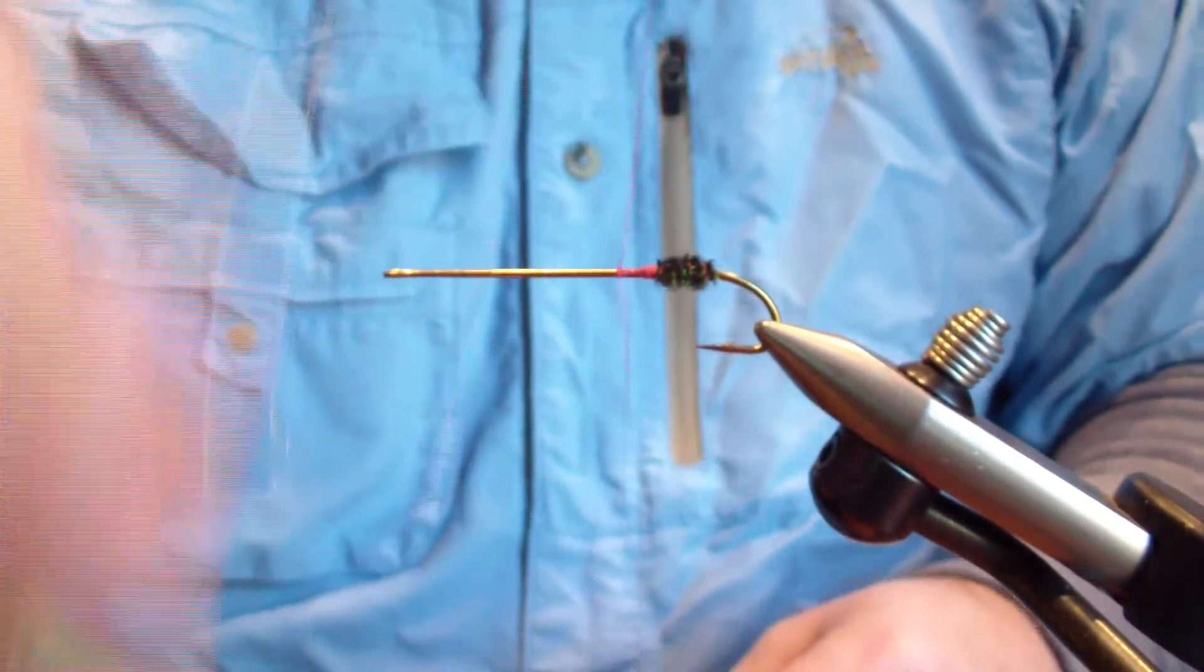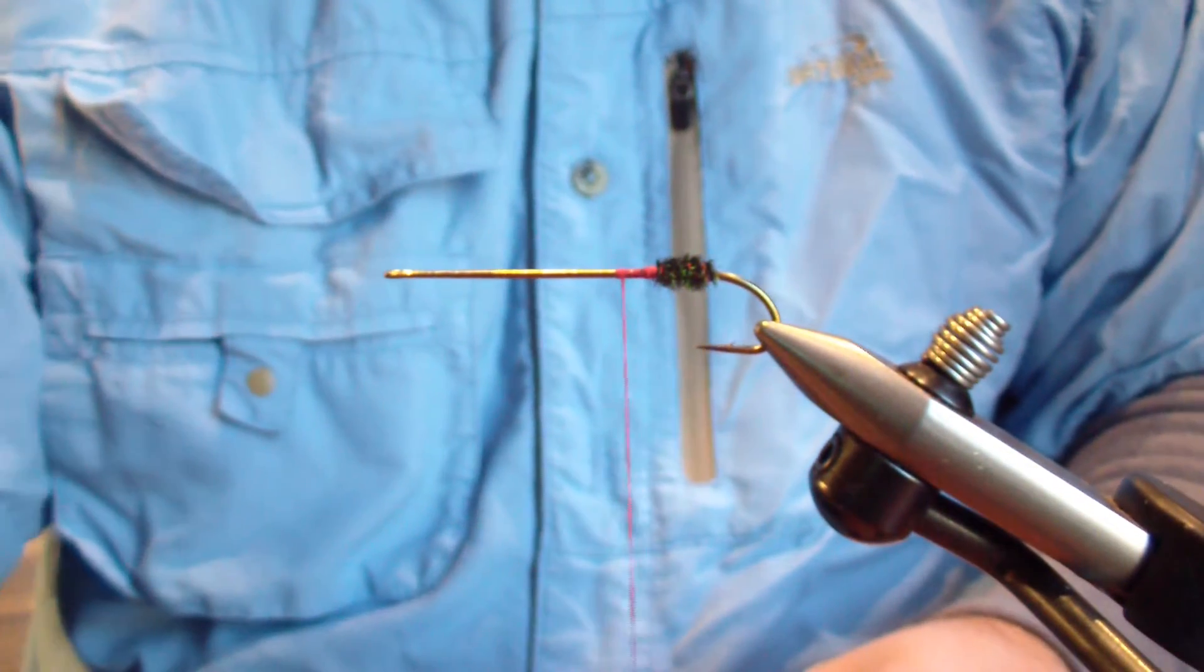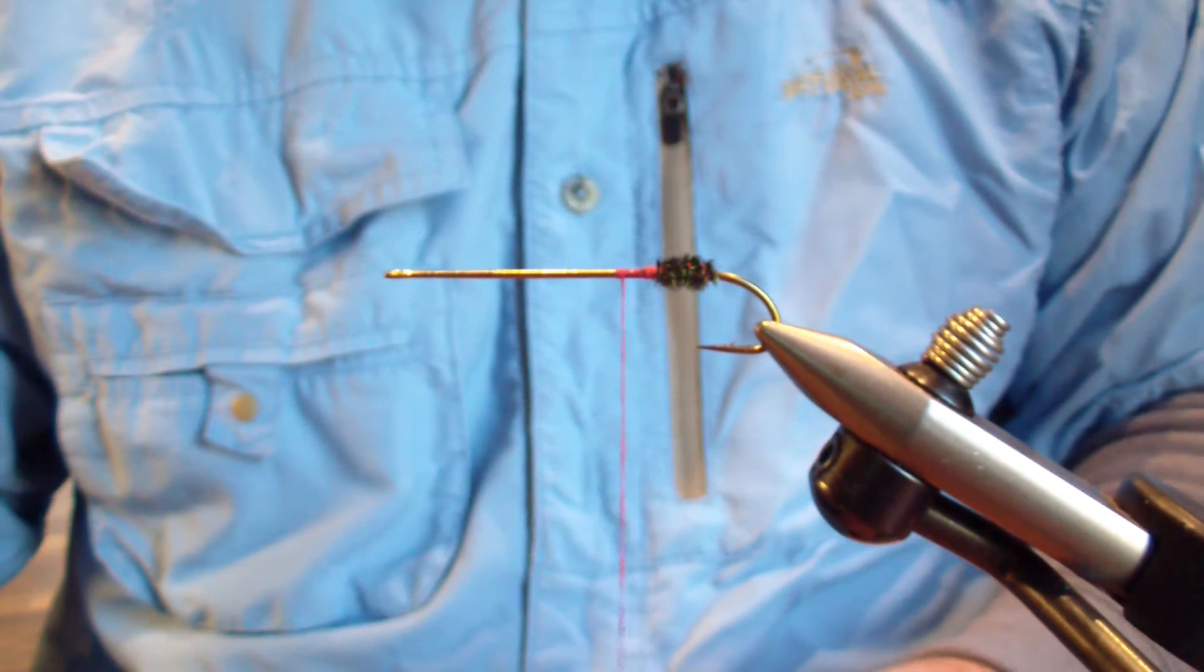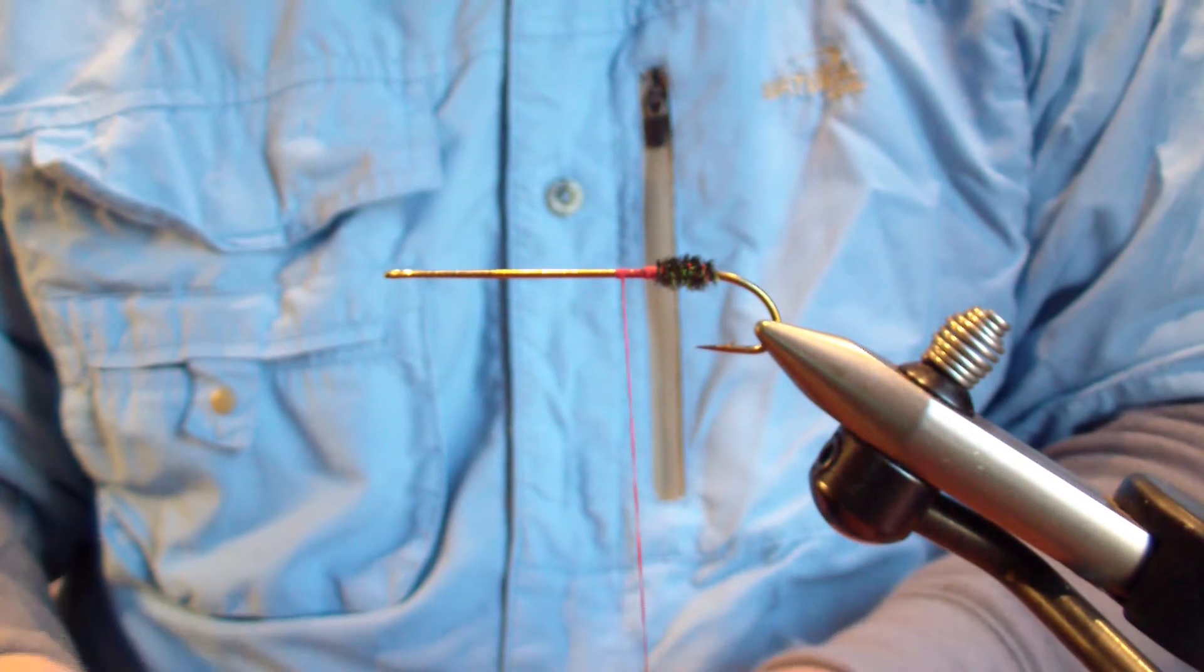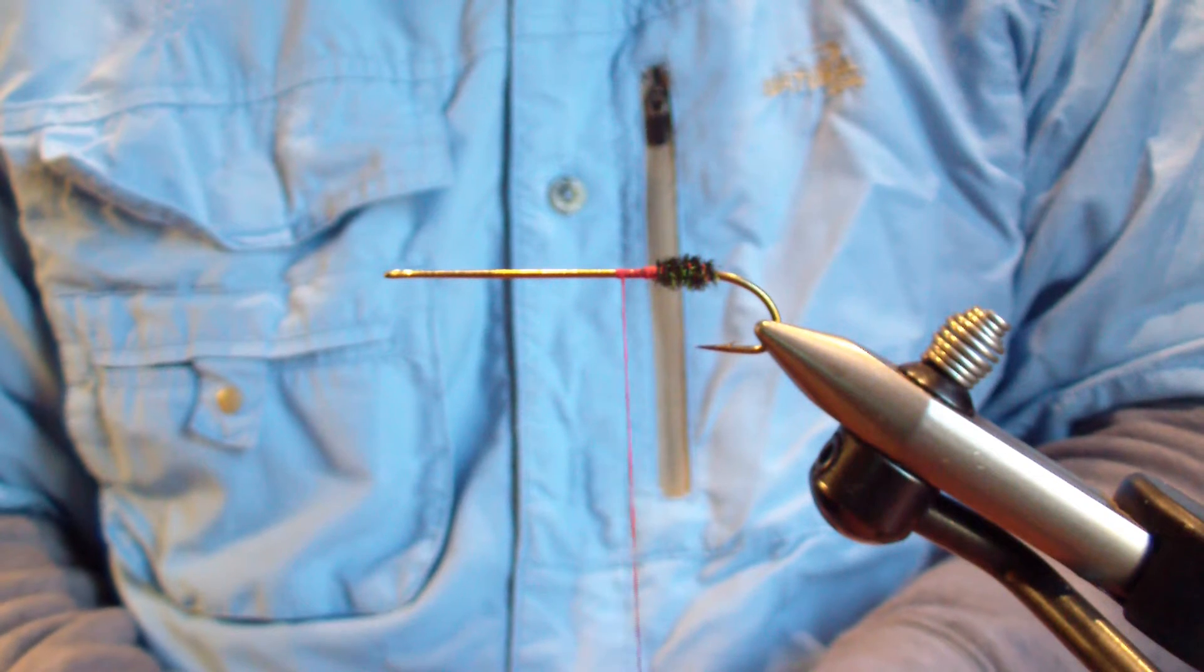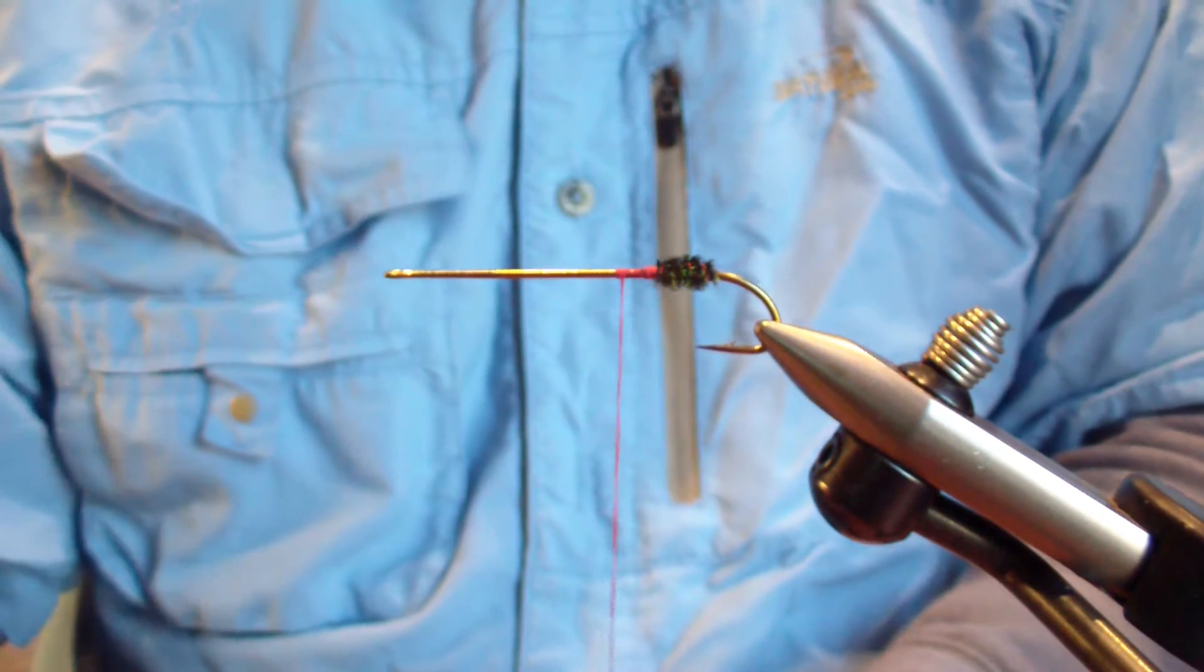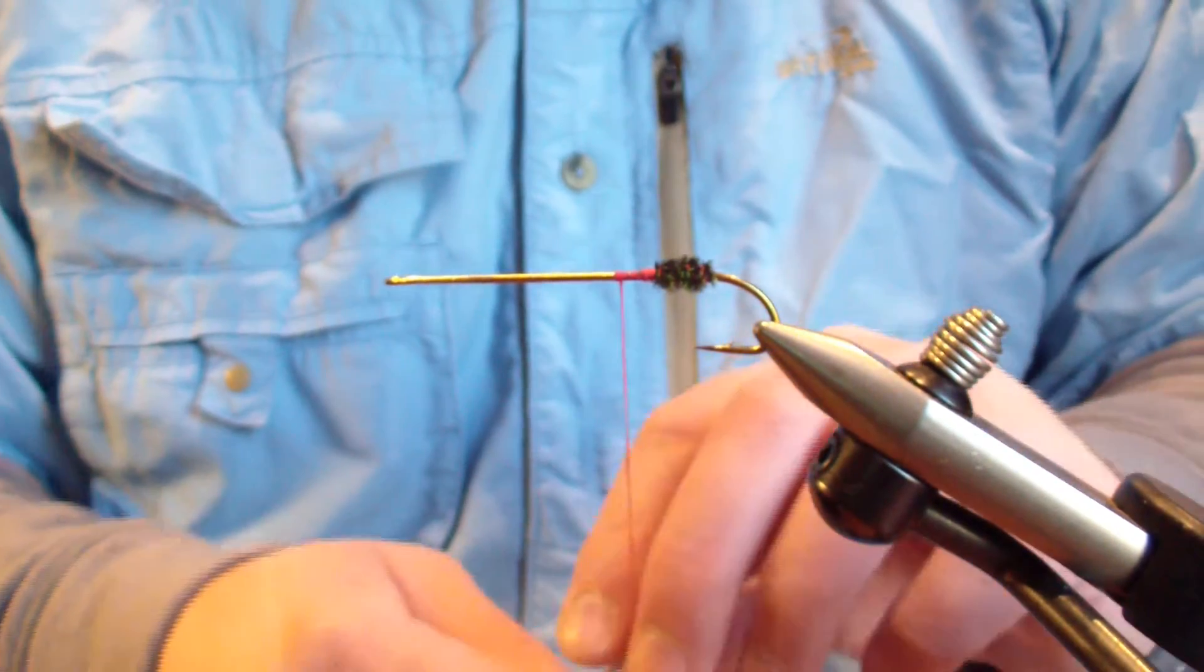The second method that I like to use requires an additional piece of material. You can enhance the peacock hurl very easily utilizing hackle. And you can turn a regular dub body or you can tie a Griffiths gnat or you can tie a Griffiths max like I've tied here on the site. Very simply.